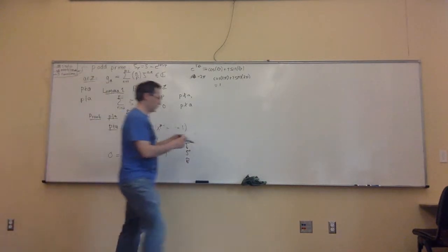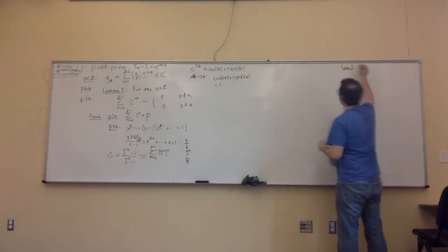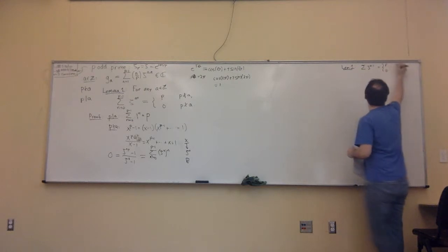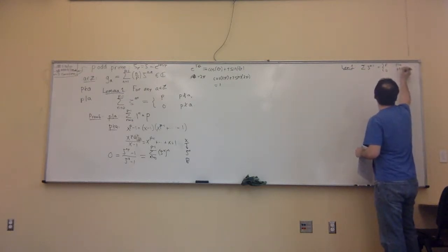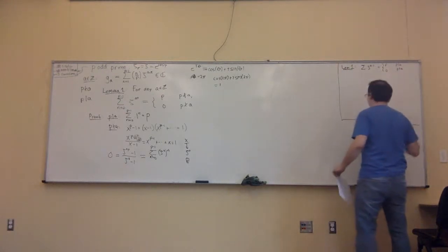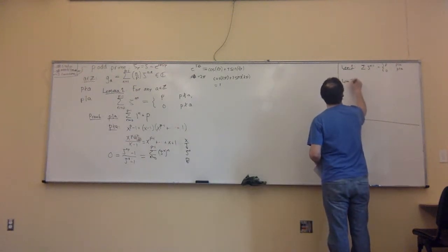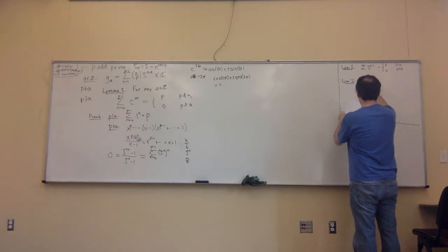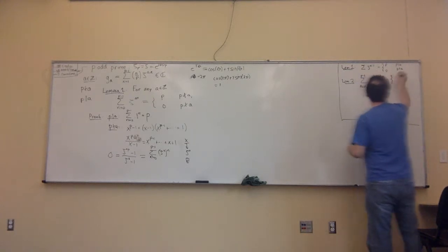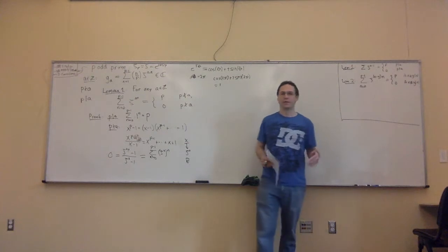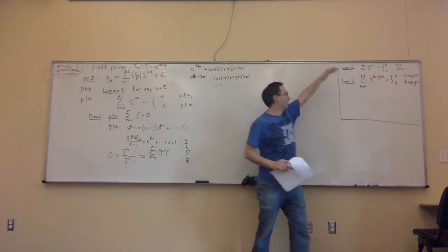So that's Lemma 1: the sum of zeta to the AN is equal to P or 0 — it's P if P divides A, and 0 if P doesn't divide A. Let's record stuff over here that we're going to use later. And then another lemma, which is really easy given the lemma we just proved. Lemma 2: the sum N equals 0 to P minus 1 of zeta to the power of X minus Y times N equals P if X is congruent to Y mod P, and 0 if X is not congruent to Y. Just a trivial application of the previous lemma.